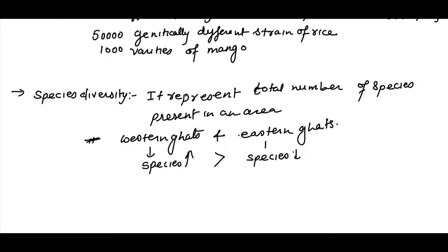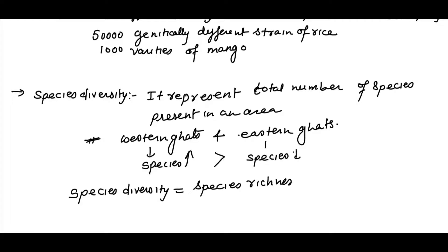We need to understand what species diversity means. Species diversity basically refers to species richness plus species evenness. Species richness is the total number of species present in an area.